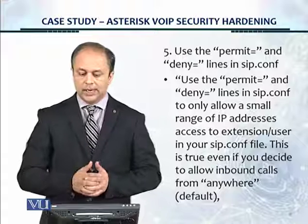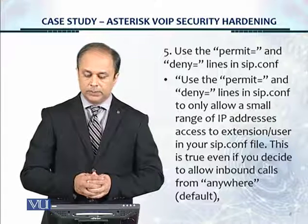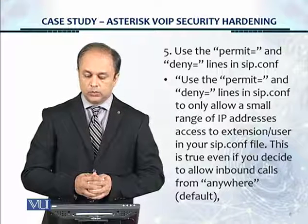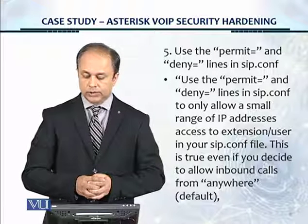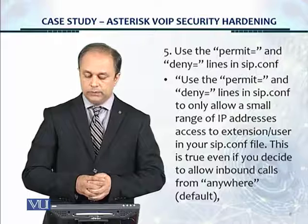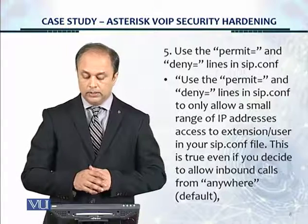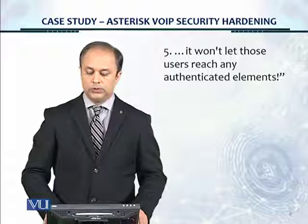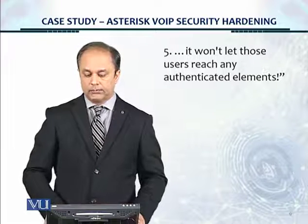Rule five: use the permit and deny lines in sip.config. Use the permit and deny lines to only allow a small range of IP addresses, and use access control per extension or user in your sip.config file. This is true even if you decide to allow inbound calls from anywhere by default — it won't let those users reach any authenticated elements. That was rule number five.